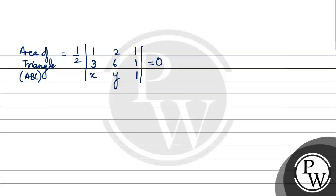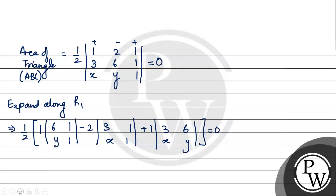Expand along R1. This implies half multiply by 1, then the matrix elements 6, 1, y, 1 minus 2 with elements 3, 1, x, 1 plus 1 with elements 3, 6, x, y. This is equal to 0.